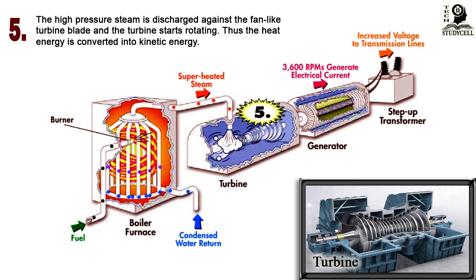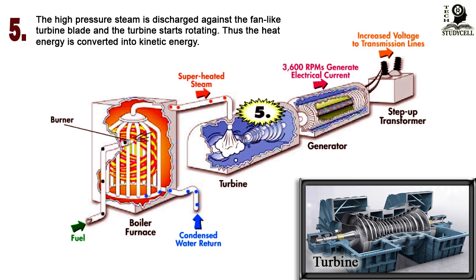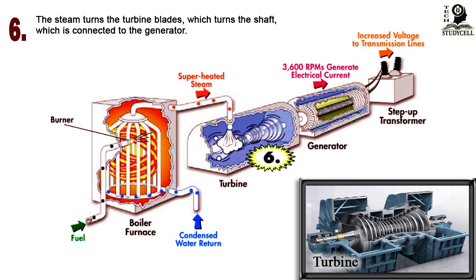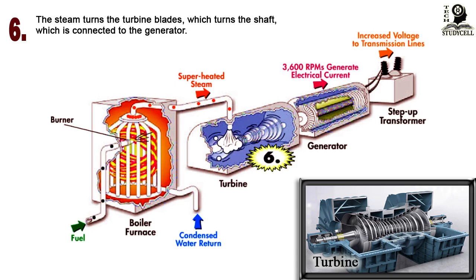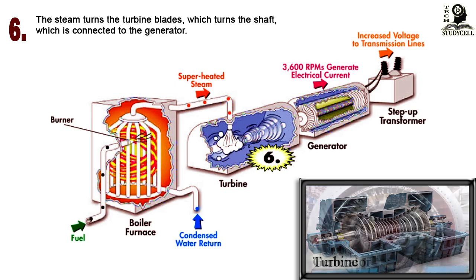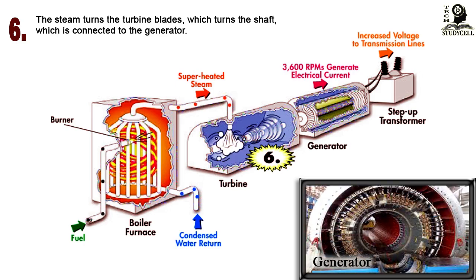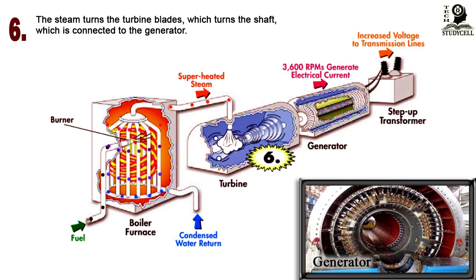Thus the heat energy is converted into kinetic energy. The steam turns the turbine blades, which turns the shaft, which is connected to the generator. The generator is where mechanical energy is converted into electrical energy.